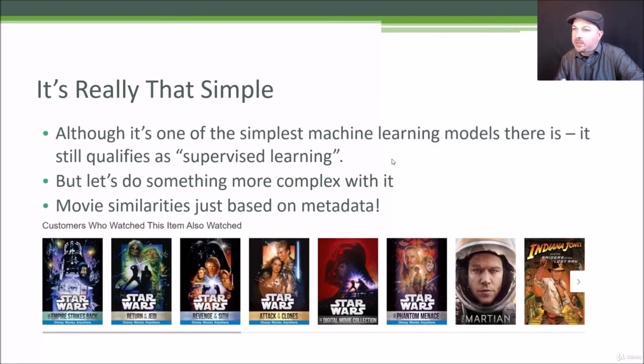So in theory we could recreate something similar to customers who watched also watched, you know this is a screenshot from amazon.com, just using K nearest neighbors. And I could take it one step further once I identify the movies that are similar to a given movie based on the K nearest neighbors algorithm, I can let them all vote on a predicted rating for that movie. So that's what we're gonna do in our next example. Let's get to it.